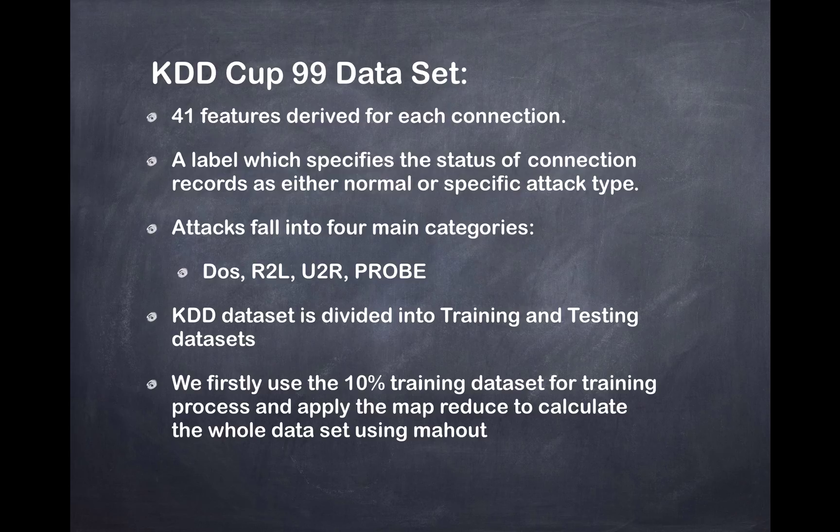As for the KDD Cup 99 dataset, there are 41 features derived for each connection and a label which specifies the status of connection records as either normal or specific attack type. The attacks fall into four main categories: DOS, R2L, U2R, and PROBE.